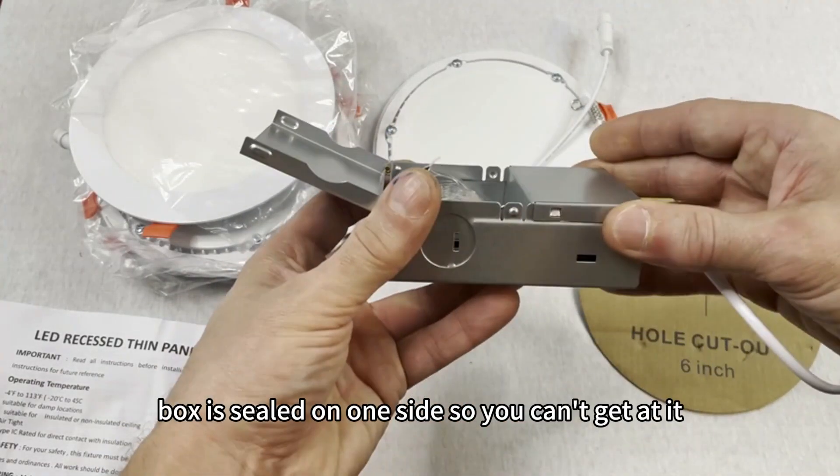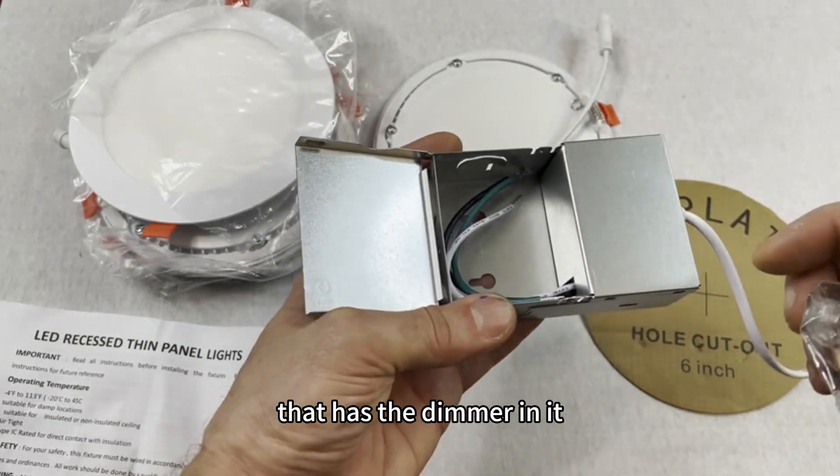The junction box is sealed on one side, so you can't get at it. That has the dimmer in it.